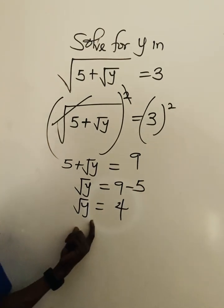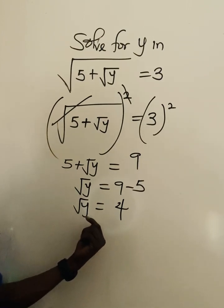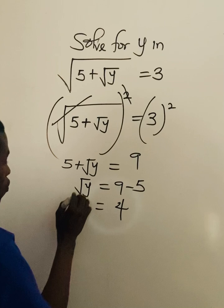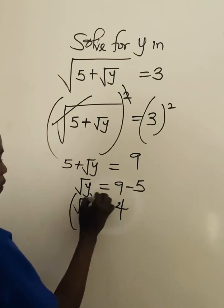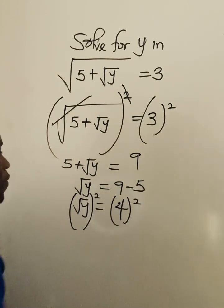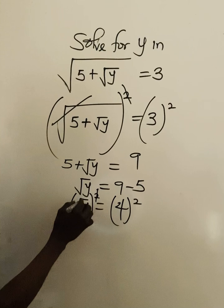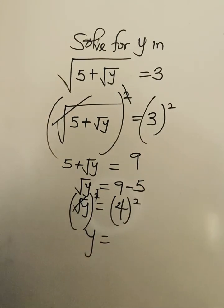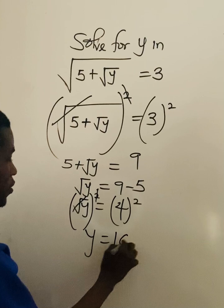So in order to find the value of y, we are going to square both sides. So this square will cancel this square root. Y equal to 4 squared, 4 times 4 will give 16.